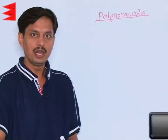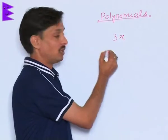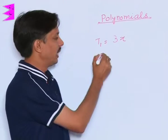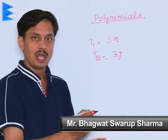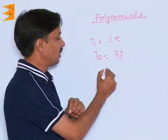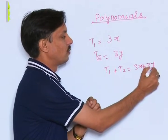For example, if I have two terms - one term is 3x, this is term number one, I am expressing here by T1, and the second term T2 is 3y. If I ask you to add, that is T1 plus T2, I get 3x plus 3y.